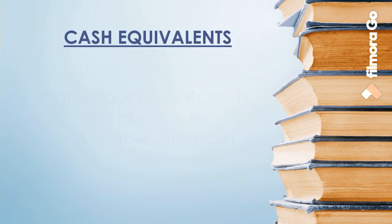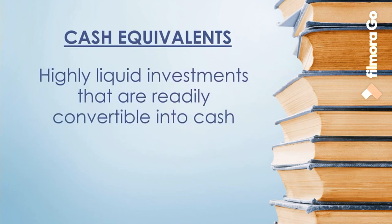Cash equivalents are short-term and highly liquid investments that are readily convertible into cash. These are investments purchased three months or less before maturity. Examples include a three-month treasury bill, a three-year treasury bill purchased three months before maturity, a three-month time deposit, and three-month money market instruments.